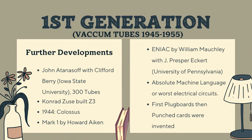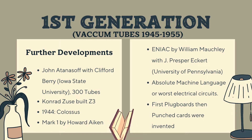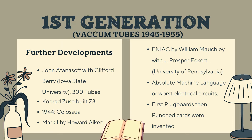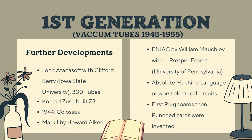Moving on with the evolution, first generation computers were the next major technology after Babbage's invention. Professor John Atanasoff and his graduate student Clifford Berry built the first functional digital computer at Iowa State University, using around 300 vacuum tubes. Conrad Zuse in Berlin built the Z3 computer out of electromagnetic mechanical relays. In 1944, Colossus was built; Britain's Mark I was built by Howard Aiken at Harvard; ENIAC was built by William Mauchly and his graduate student Presper Eckert at the University of Pennsylvania.